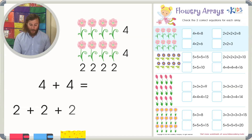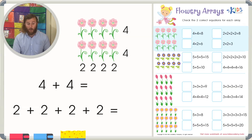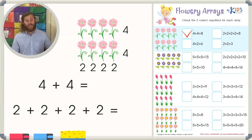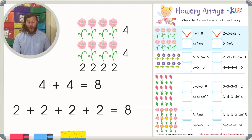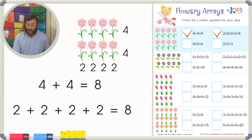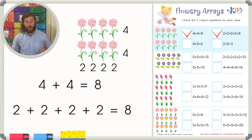Another equation we can write is by the columns: two plus two plus two plus two. Let's find these equations and give them a check. Four plus four equals eight — if we count all of our flowers, one through eight, that's the total. Two plus two plus two plus two also equals eight, and that equation is right here. The other options — four plus two equals six, and two plus two equals three — do not match our array or are just not true.